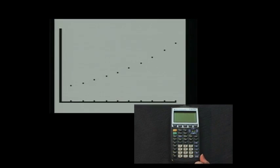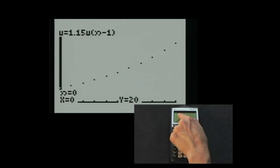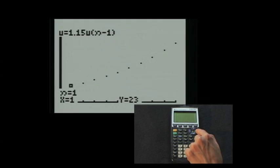Now we press graph and are able to view the plot on the screen as you see here. If you press trace, you will see the general term of the system in the top left corner. You can use the left and right arrow keys to move among the data points.